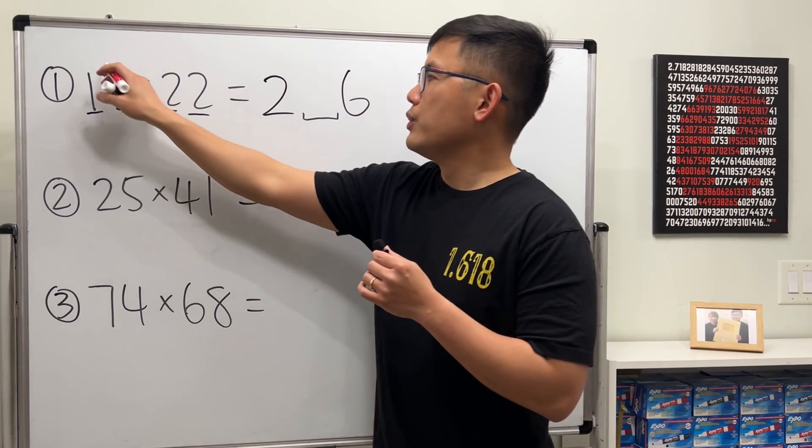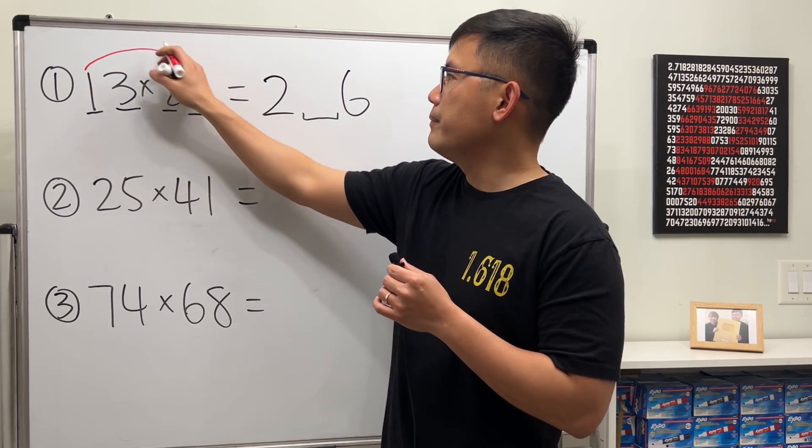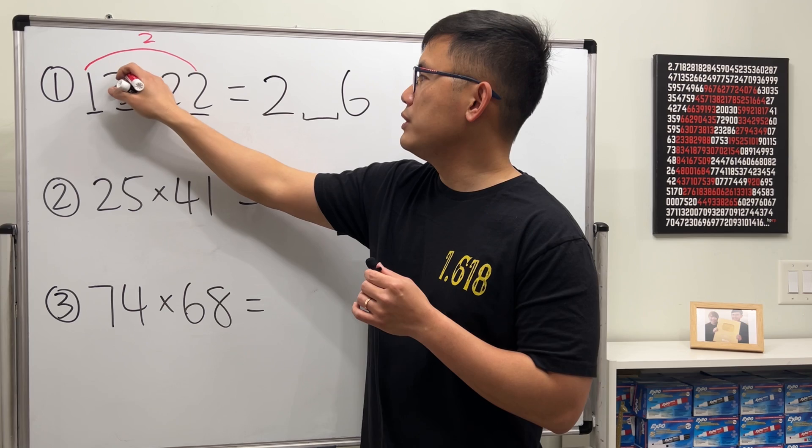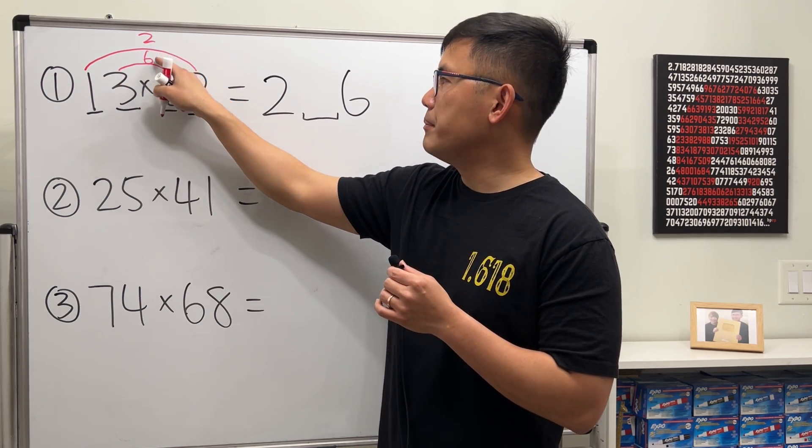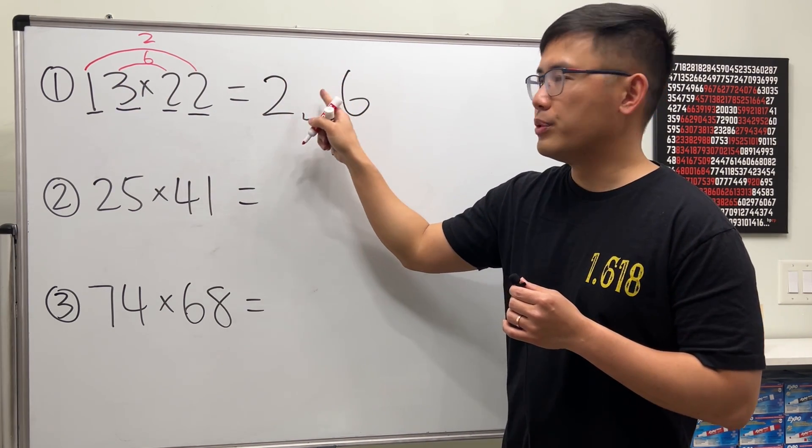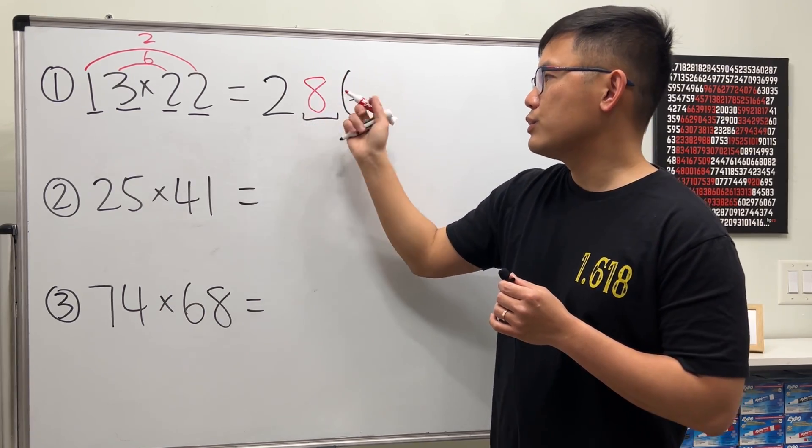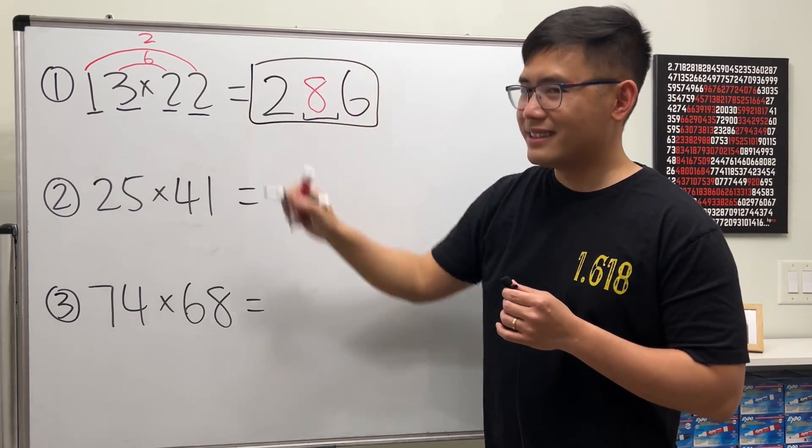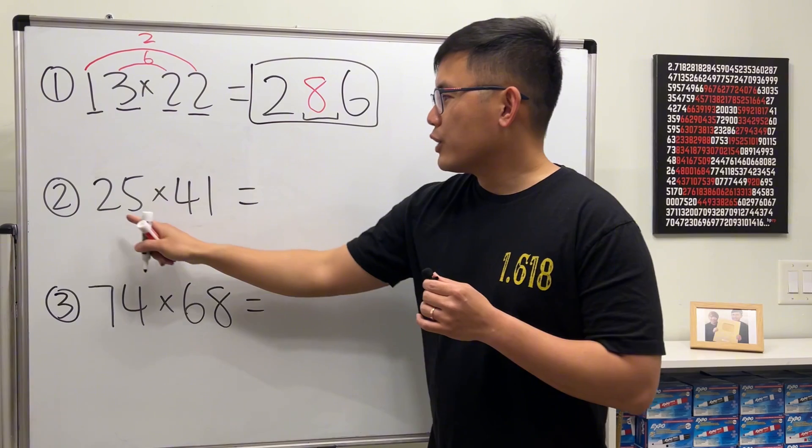Finally, you do 1 times 2 which is 2, and then you do 3 times 2 which is 6. Add them up which is 8, and then you put it here. So the answer is 286. Done. Next, 25 times 41.